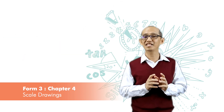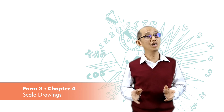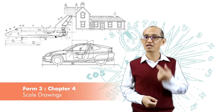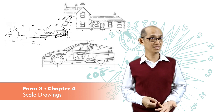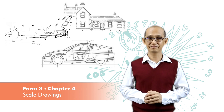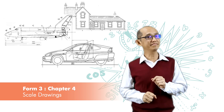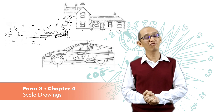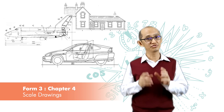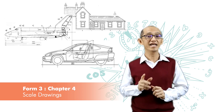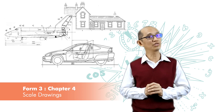A scale drawing can be smaller than the actual things. For example, the drawings of buildings, aeroplanes, cars, and so on — these drawings are smaller than the actual things. A scale drawing can also be larger than the actual things. For example, the scale drawing of the component parts in your handphone can be larger than the actual component parts.